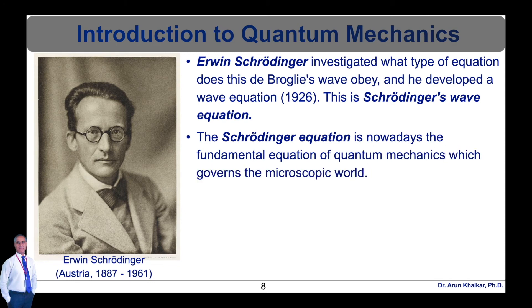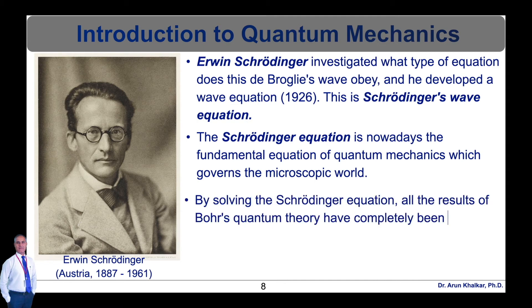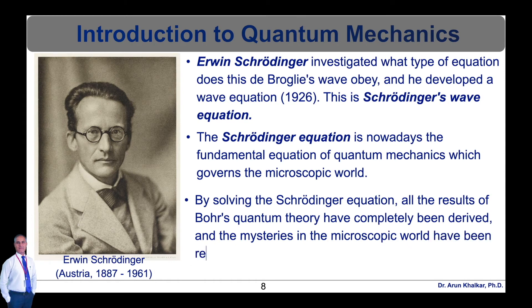The Schrodinger equation is nowadays the fundamental equation of quantum mechanics which governs the microscopic world. It can be properly compared with Newton's equation of motion, which is the fundamental equation in classical mechanics. By solving the Schrodinger equation, all the results of Bohr's quantum theory have been completely derived and the mysteries in the microscopic world have been resolved one after another.